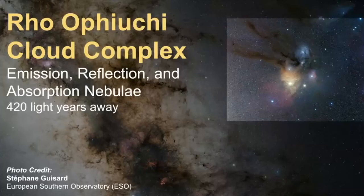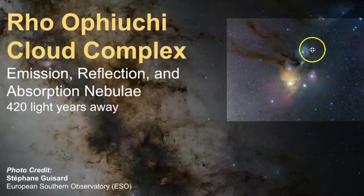To give you a brief overview, the Rho Ophiuchi cloud complex is both an emission, reflection and absorption nebula right here. And it's estimated to be 420 light years away.